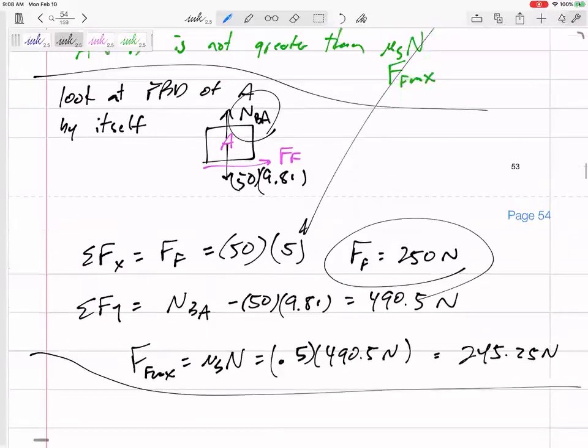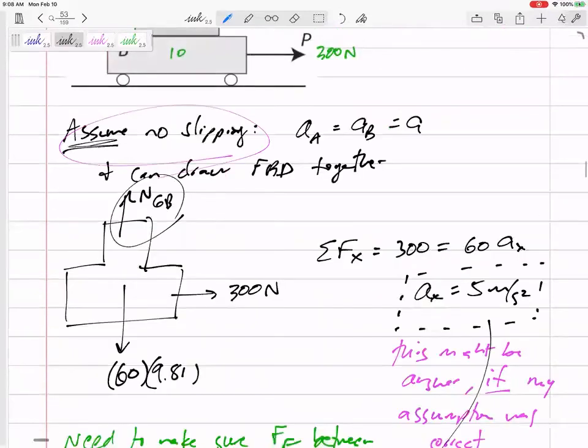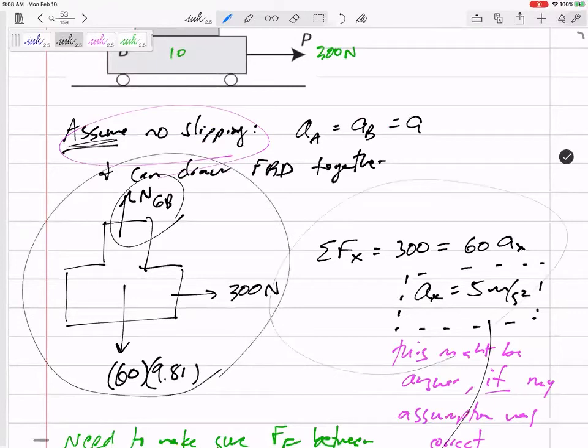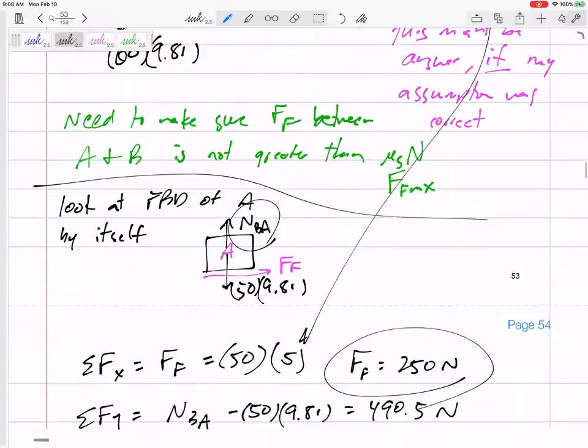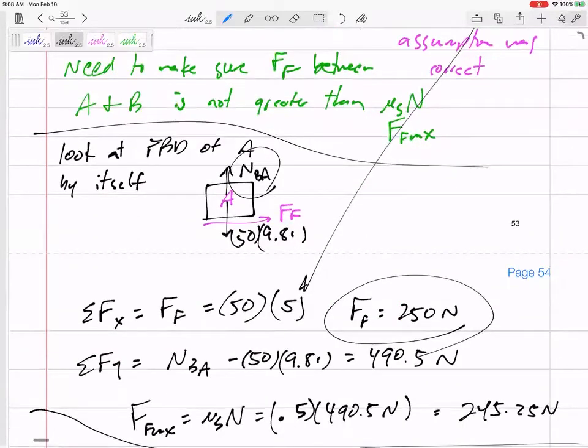So now that it is slipping, can I reuse that free body diagram right here and this equation? No, that free body diagram is, they're no longer moving together with the same acceleration. So I can't reuse that. Can I reuse this free body diagram? Sure, yeah, I can reuse that free body diagram.